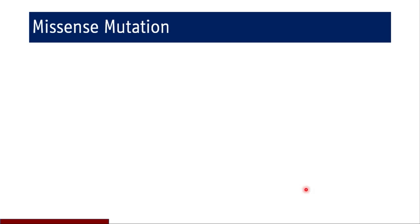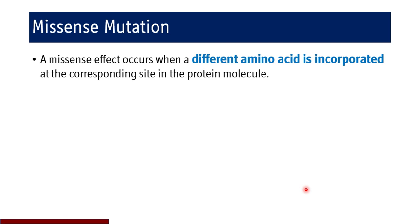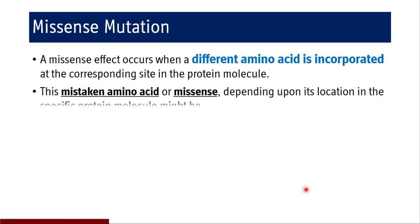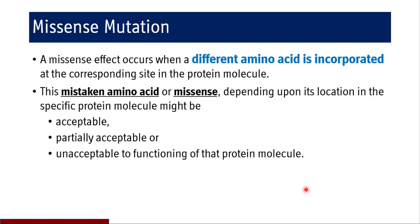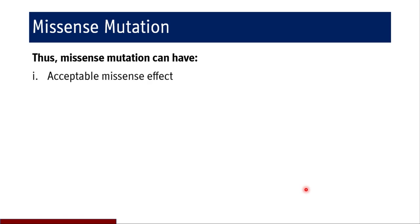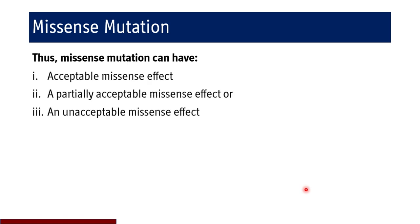A missense mutation occurs when a different amino acid is incorporated at the corresponding site in the protein molecule. Whether this mistaken amino acid is acceptable depends on its location in the specific protein — it might be acceptable, partially acceptable, or unacceptable to the functioning of that protein. It also depends on quaternary structure: whether the amino acid is in the core or facing the exterior of the molecule will affect protein function.